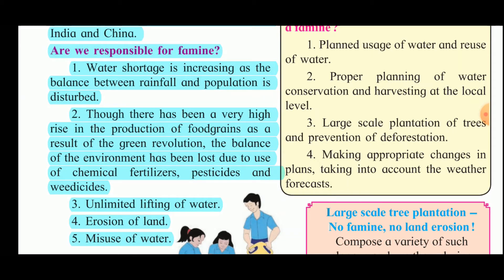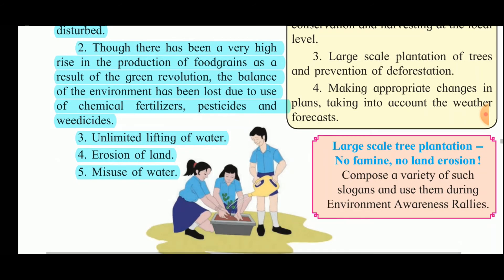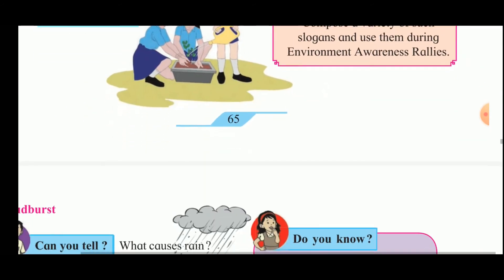Are we responsible for famine? The answer is yes. Water shortage is increasing as the balance between rainfall and population is disturbed. Though there has been a very high rise in food grain production due to the Green Revolution, the environmental balance has been lost due to use of chemical fertilizers, pesticides, and weedicides. Unlimited lifting of water, erosion of land due to fewer trees and less grass, and misuse of water are also contributing factors.